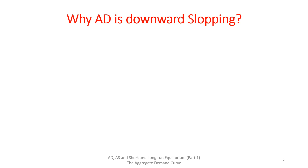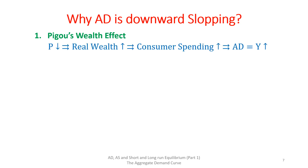Now that we have derived the aggregate demand curve, let's look at the reasons for it to be negatively sloped. There are three explanations for the downward slope of the aggregate demand curve. First is called Pigou's wealth effect, named after the famous classical economist Mr. Pigou. According to this, a decrease in price level increases the purchasing power of wealth, which is also called real wealth. This increase in real wealth results in increased spending expenditures, which translates into increasing aggregate demand or output level.